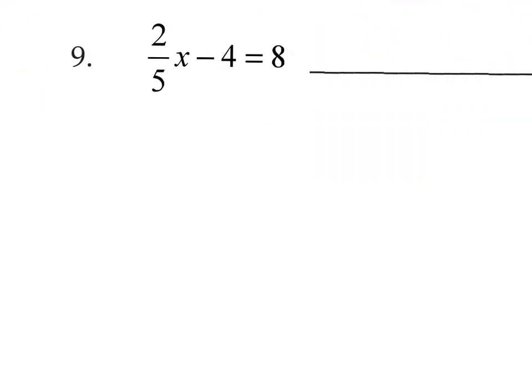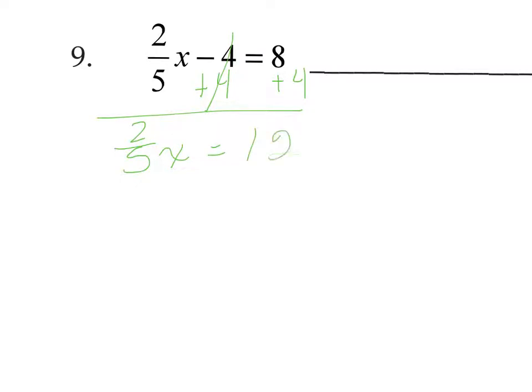On number 9, here's your fraction friend again. Since there's only one fraction, we don't need to clear fractions — we can take care of a fraction coefficient at the end with a reciprocal. Let's get rid of this negative 4 first by adding 4 to both sides. So 2 fifths x equals 12.